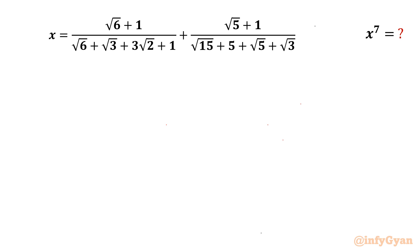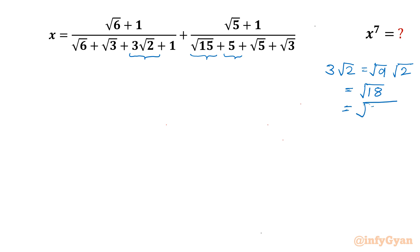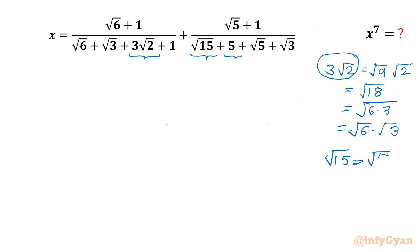Let's get started by considering two important terms: 3√2 and √15. We can write 3√2 equal to √9 times √2, which further can be written as √18. Factorization of 18 is 6 times 3, so in place of 3√2 we can write √6 times √3. Similarly, √15 can be written as √5 times √3.